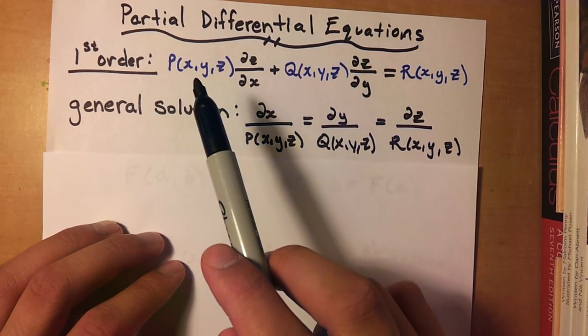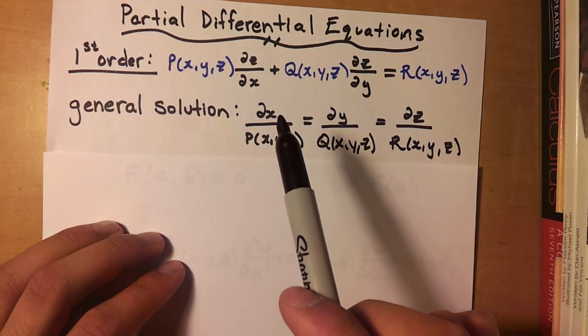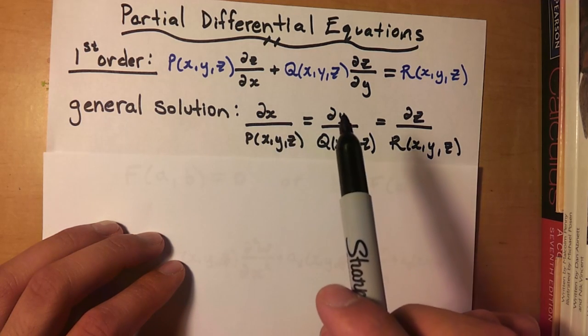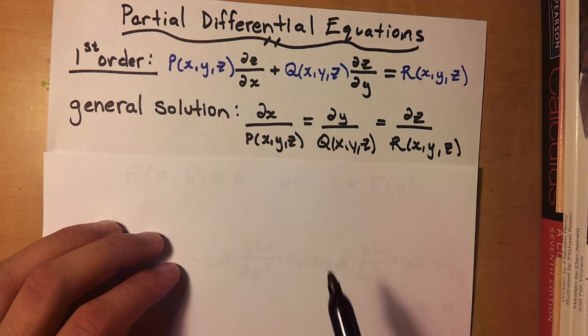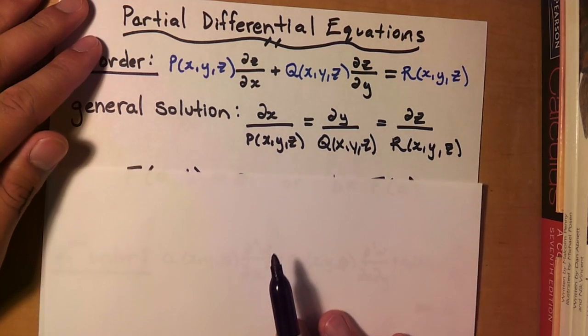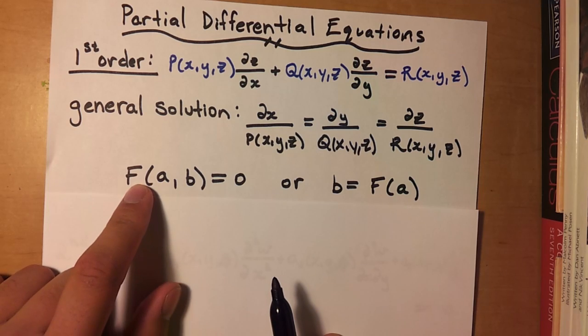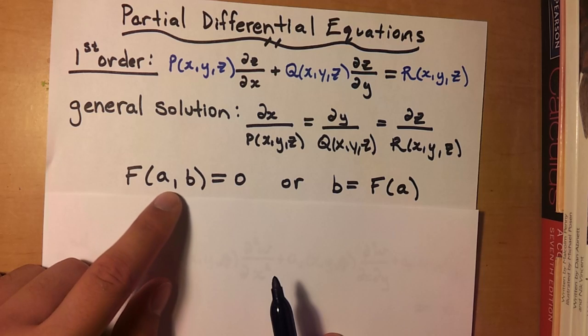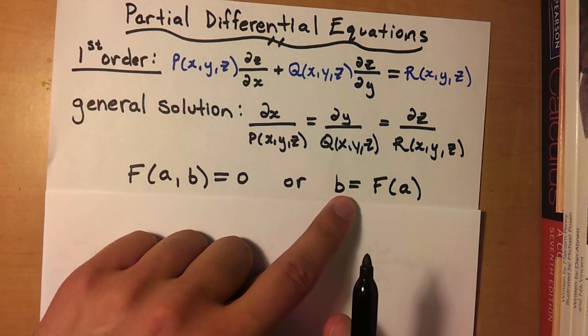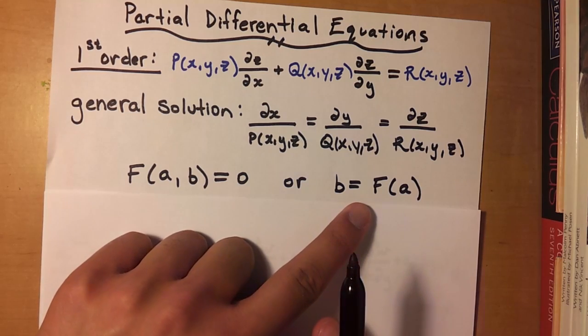Alright, so you have your P here corresponds to your dx. So you're going to have dx over P, which is equal to dy over Q, and then dz over R. And then you're going to form your solution in this form: capital F, or you could use any variable g, of A, B, is equal to zero. Or the other form, and more useful form, is B equals F of A. So we'll get started with a problem.